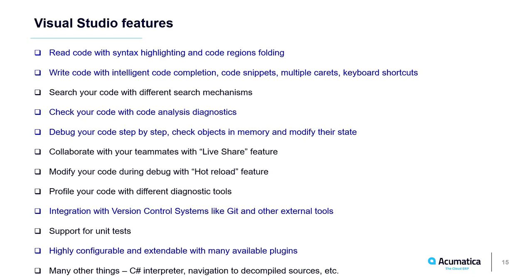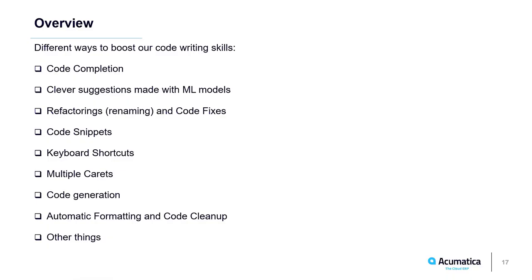There are also features like a C# interpreter that allows you to write and immediately evaluate simple code, navigation to decompiled sources, code quality metrics calculation, and many more. In this session, we will look at some of these features to see how you can write code more efficiently. We're going to discuss code completion, Visual Studio machine learning features, code snippets, and multiple carets, plus some useful keyboard shortcuts.